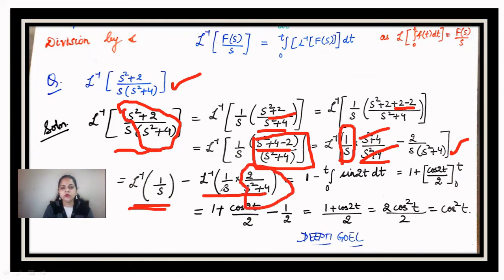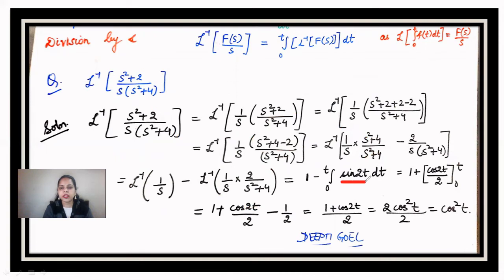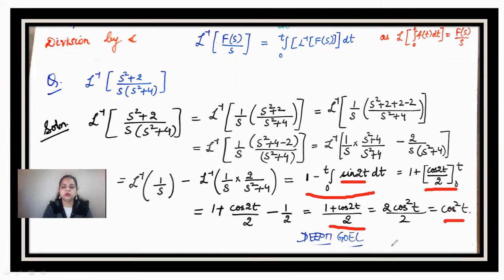For the second part, F(s) = 2/(s²+4) and f(t) = Laplace inverse of 2/(s²+4) = sin(2t). Applying the division-by-s formula: we integrate from 0 to t, giving the integral of sin(2t) dt = −cos(2t)/2. Evaluating with limits: 1 + cos(2t)/2 = cos²(t). So the final answer is cos²(t).